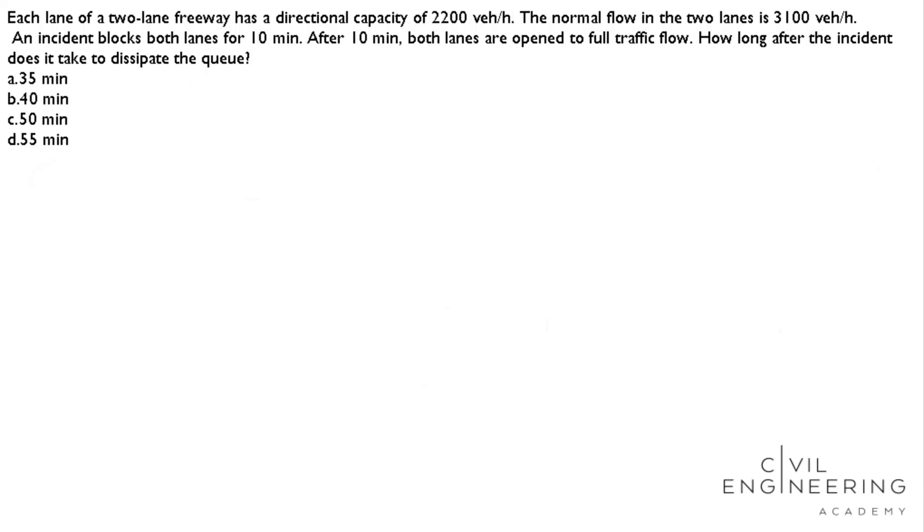Here is our problem: Each lane of a two-lane freeway has a directional capacity of 2200 vehicles per hour. The normal flow in the two lanes is 3100 vehicles per hour. An incident blocks both lanes for 10 minutes. After 10 minutes, both lanes are open to full traffic flow. How long after the incident does it take to dissipate the queue?